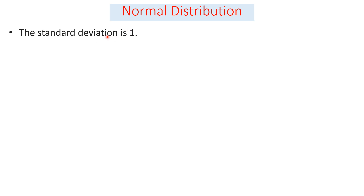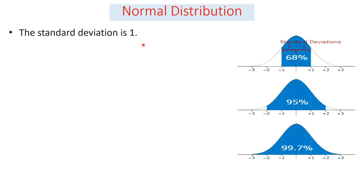But before moving to skewness and kurtosis, let us see some of the properties of normally distributed data. The first property is the standard deviation is 1. When the standard deviation is 1, 68% of our data is found from minus 1 to plus 1 standard deviations. And 95% of the data is found from minus 2 up to plus 2 standard deviations. And 99.7% of our data is found in the range minus 3 up to plus 3 standard deviations.